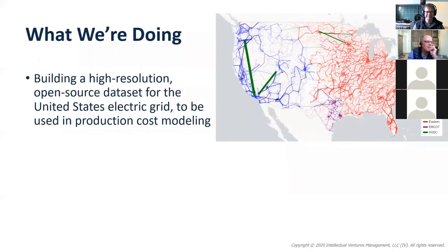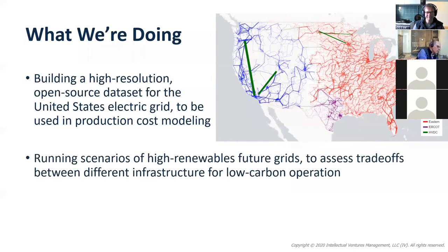We are trying to build the most high-resolution, both in time and space, open-source dataset for the US electric grid, to be used for production cost modeling at least now, and hopefully for capacity expansion modeling in the future. We are also using this model to run various scenarios for high renewable and high clean energy penetration of what the grid might look like in the future.